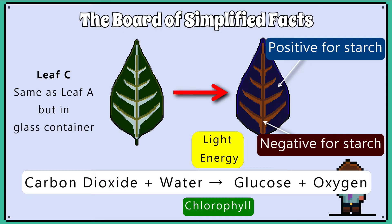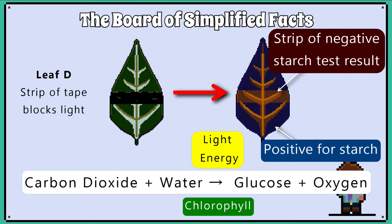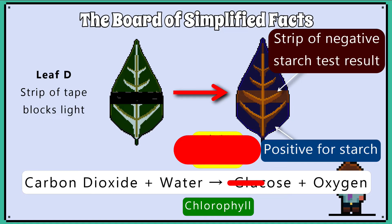So, photosynthesis happens as normal in Leaf C. Eventually, the leaf would be affected, as the carbon dioxide would run out in the sealed container, but in this experiment, not enough time had passed. Leaf D shows a strip where the starch test is negative. This shows that the tape blocked the light and the leaf was not photosynthesising where the tape was, and therefore not making any glucose and therefore no starch. So, this shows that light is needed for photosynthesis to occur.